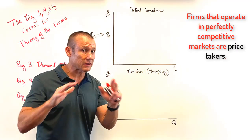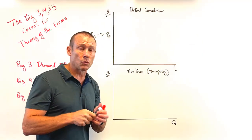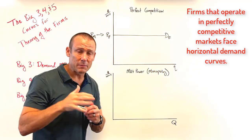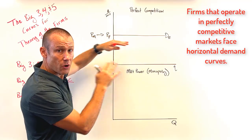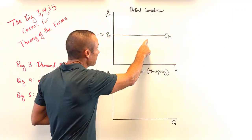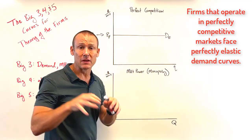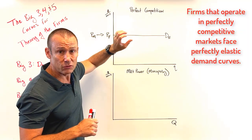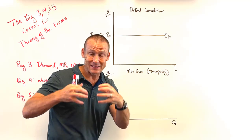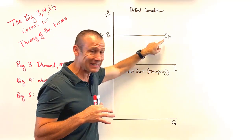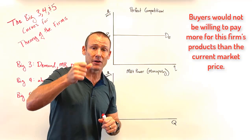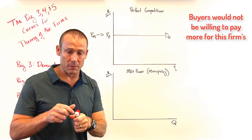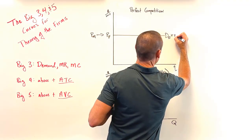That's the key to understanding the demand curve the firm faces — not the market demand curve, but the demand curve for this individual firm. In perfect competition, firms face a flat, perfectly elastic demand curve. Since they have no pricing power — there are identical products sold by many other firms — if they try to raise the price at all, quantity demanded goes to zero. That's a perfectly elastic demand curve.